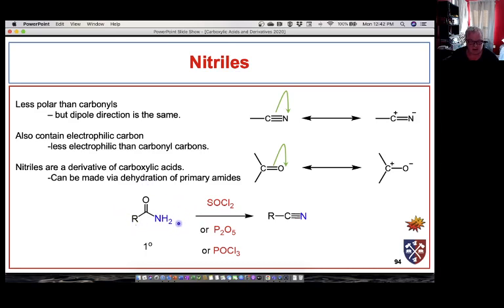You can make a nitrile from a primary amide by removing the elements of water, two hydrogens and an oxygen, to form a carbon-nitrogen triple bond. You need strong dehydrating agents like thionyl chloride, P2O5, or phosphorous oxychloride. All of those will accomplish the dehydration of a primary amide to make the carbon triple bond that gives you a nitrile.